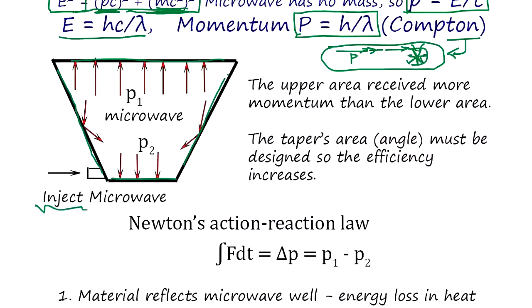We inject microwave from one side. Then this cavity is filled with microwave and the microwave bounces around. There is a differential between total momentum on this side and total momentum on this side. Because when microwave density is constant in the cavity, the momentum depends on the area.